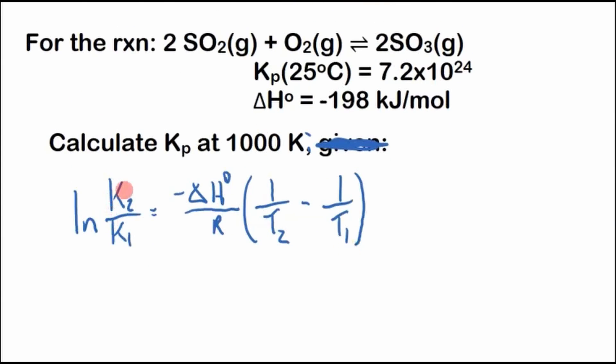It doesn't matter which is K2 and which is K1. We're solving for K, so let's call this K2 just because it's in the numerator. We'll call this K1. And what does matter though, if this is K1, then this has to be T1. We want it in Kelvin, so this has to be T2.